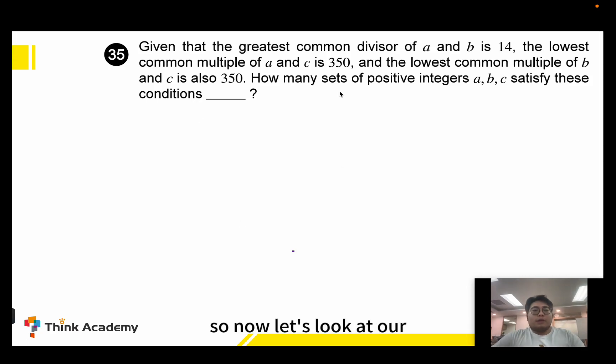Okay hello everyone, let's look at question 35. After reading the question we know A and B's GCD is 14, A and C's LCM is 350, and B and C's LCM is also 350. So we need to find out how many types of ABC can we have.